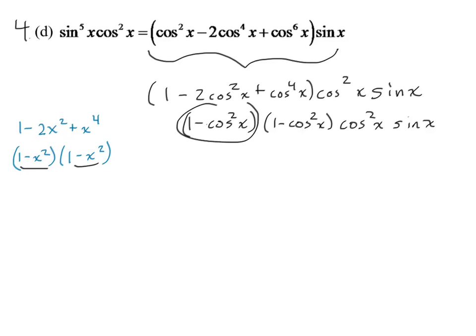Now, you should recognize these guys because it's a Pythagorean identity. Each of those guys equals sine squared X. So, if I take them out and just put sine squared X into both of those, this is what I got.